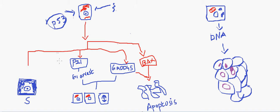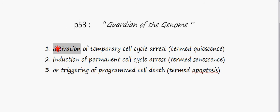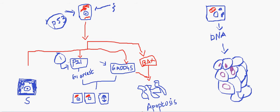The first mechanism shown here is the activation of the p21 gene or the activation of the GADD45 gene. By activating p21, which is a cyclin-dependent kinase inhibitor, when a cyclin-dependent kinase is inhibited, the cell cycle is arrested in the G1 phase. So ultimately, the first mechanism leads to temporary cell cycle arrest.